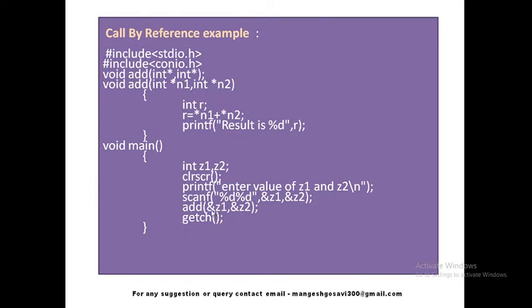So if the user enters z1 as 10 and z2 as 20, it is not the values 10 and 20 that are passed — the address of 10 and the address of 20 are passed. By making this change, it means we are passing the address of z1 and z2 to the add function.